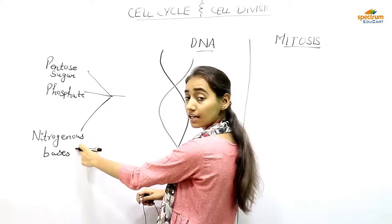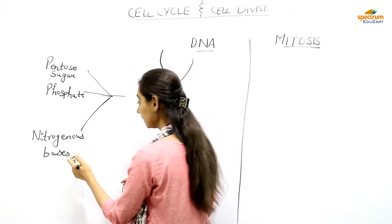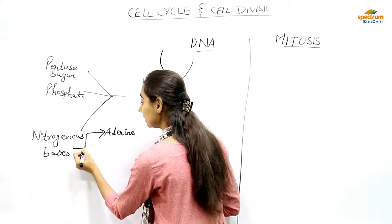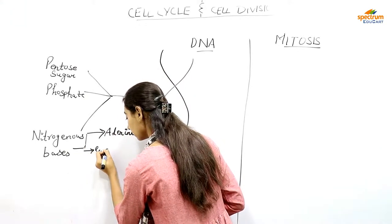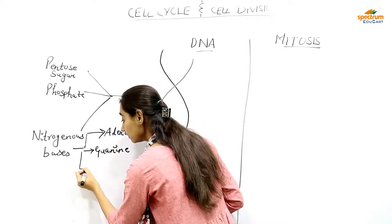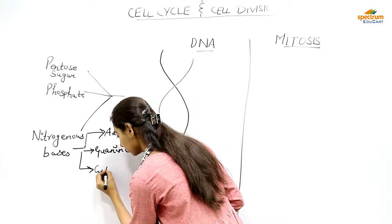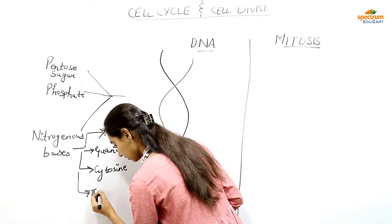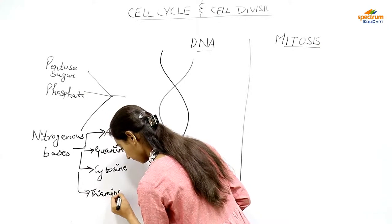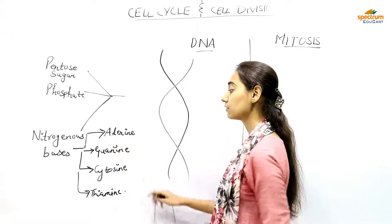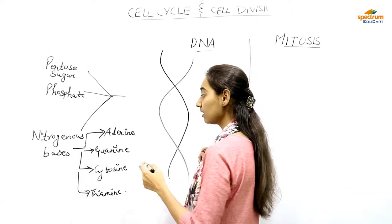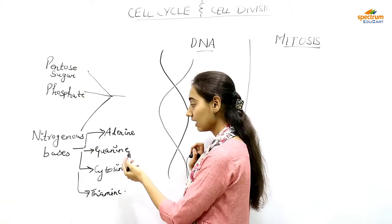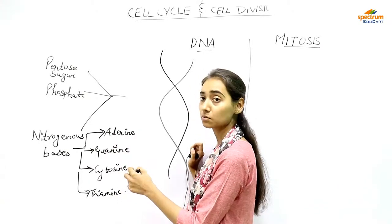DNA consists of three parts: phosphate, pentose sugar, and nitrogenous bases. The nitrogenous bases are divided into four types: adenine, guanine, cytosine, and thymine. These nitrogenous bases are bonded to each other with hydrogen bonds. Adenine and thymine are attached to each other with a double bond, and guanine and cytosine are attached with a triple hydrogen bond.